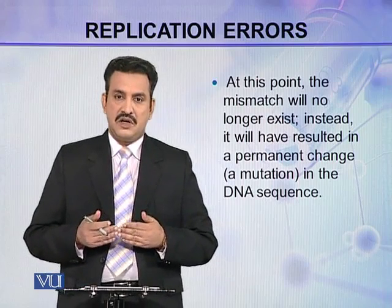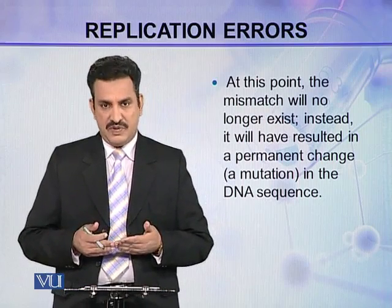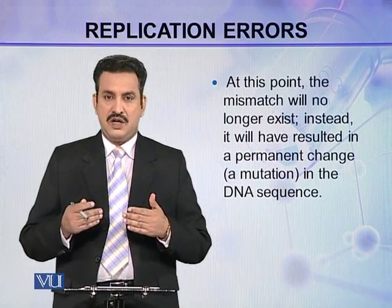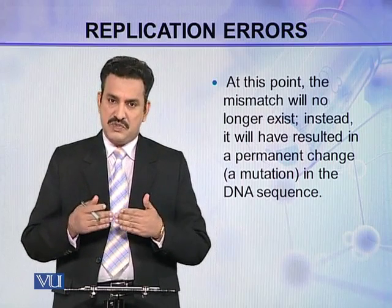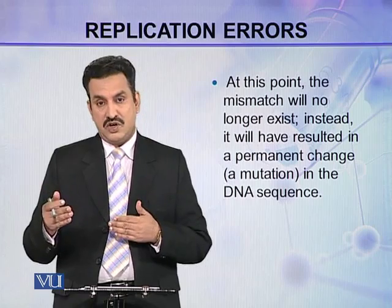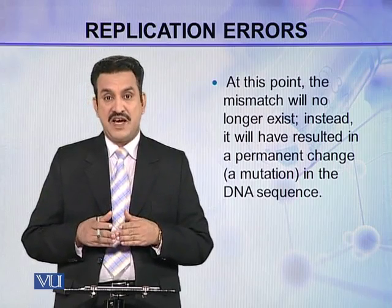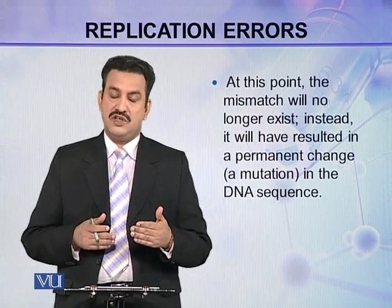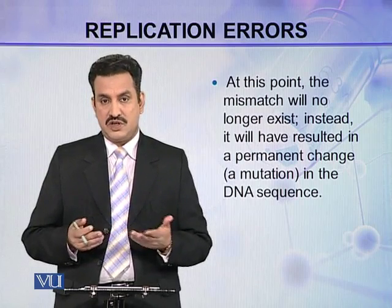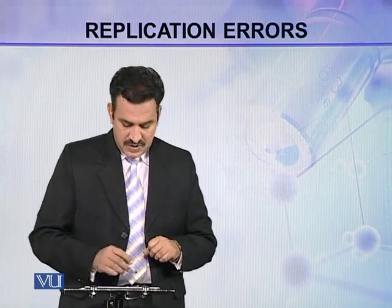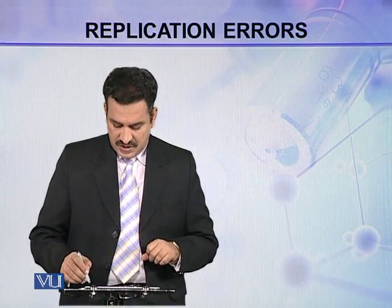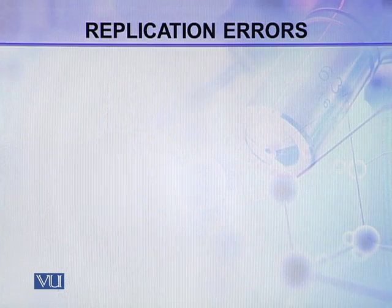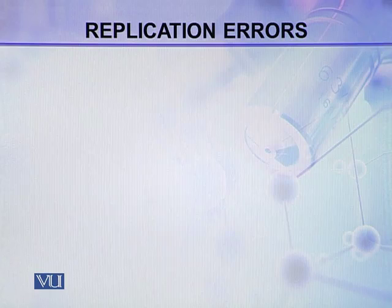In this way, in the first round of replication a nucleotide may be mismatched, but in the second round that mismatch results in a permanent change in the sequence, which is called a mutation. Let me explain this misincorporation a little more.